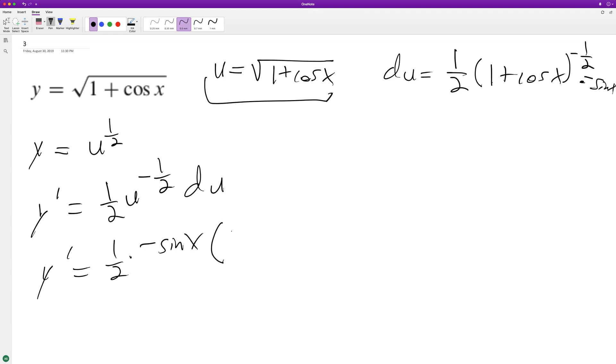And then quantity 1 plus cosine x raised to the negative 1/2. And this whole part out here is our du. And then finally, rearranging this nicely...